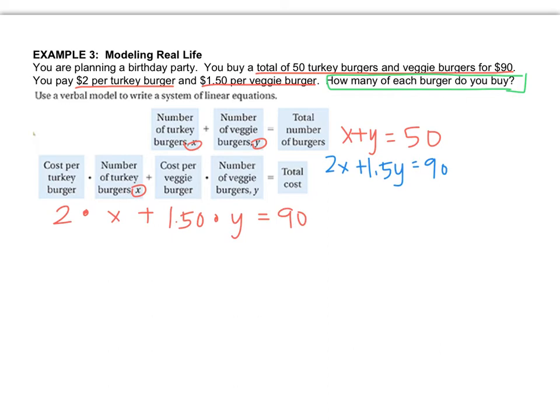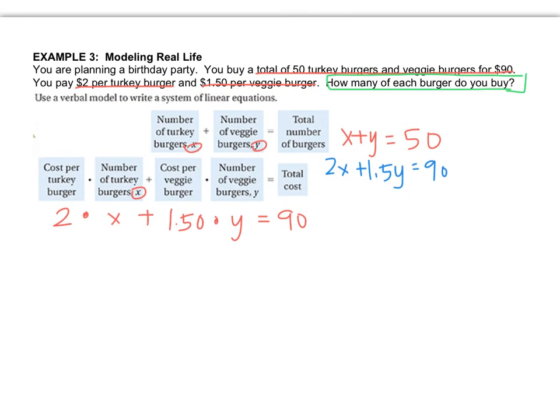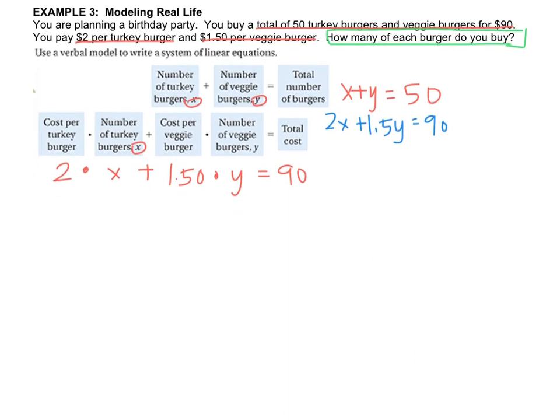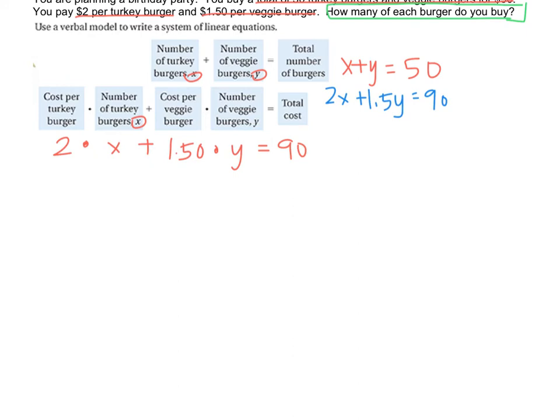So now there's no graph paper around, and also I don't really want to go up to 90. So I'm going to use my algebraic technique, which is substitution. In substitution, you have to get a variable by itself. Neither of the equations have a variable by themselves, but this first equation looks pretty friendly, because all I can do is move one of the variables over to the other side. So if the equation is x plus y equals 50, and I move the y, then the equation now is x equals 50 minus y.